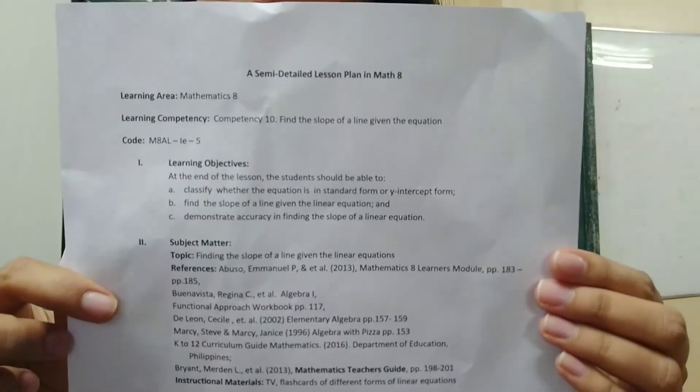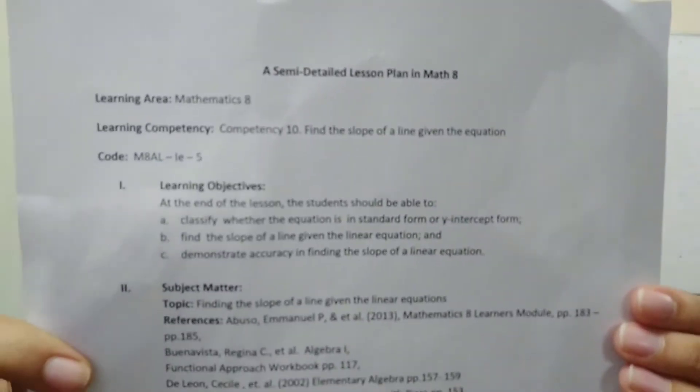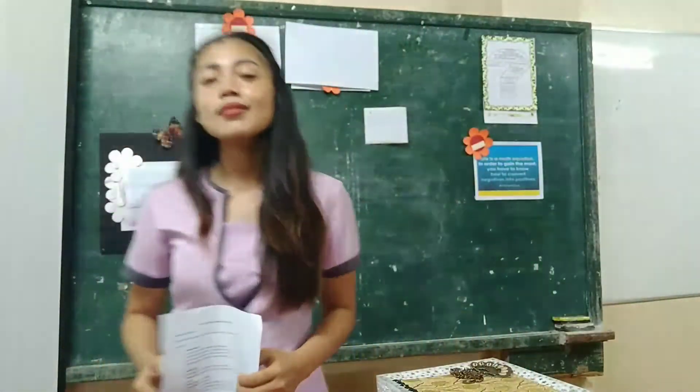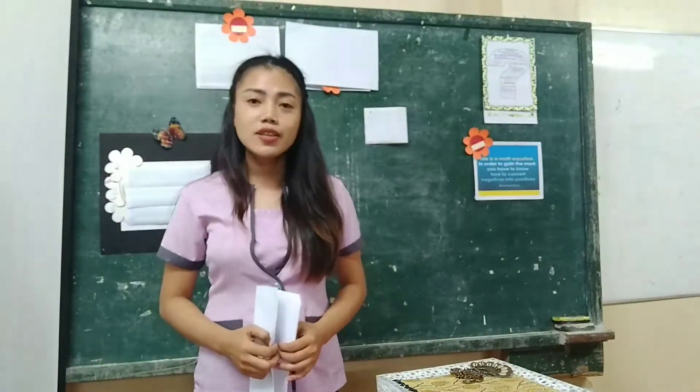Good day! I am Jessa Asoy Kutin, a junior high school applicant, and this is my semi-detailed lesson plan. The learning area that I have chosen is Mathematics 8 with the learning competency: find the slope of a line given the equation. The topic is about finding the slope of a line given the linear equation. I will start now with my teaching demonstration.